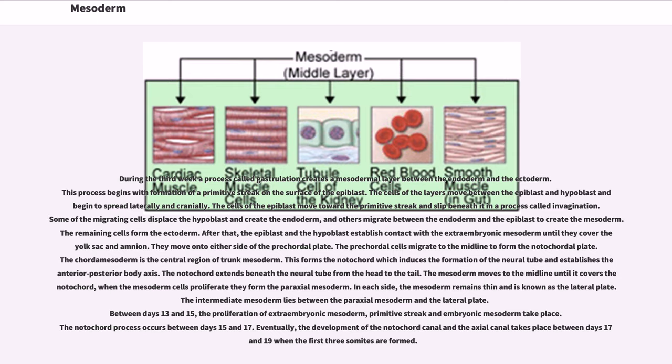After that, the epiblast and the hypoblast establish contact with the extraembryonic mesoderm until they cover the yolk sac and amnion. They move onto either side of the prechordal plate. The prechordal cells migrate to the midline to form the notochordal plate. The chordal mesoderm is the central region of trunk mesoderm. This forms the notochord which induces the formation of the neural tube and establishes the anterior posterior body axis.